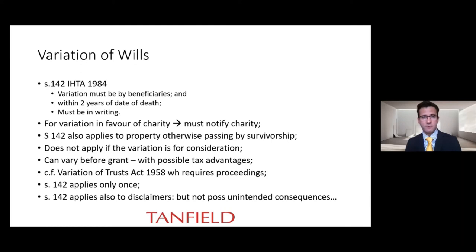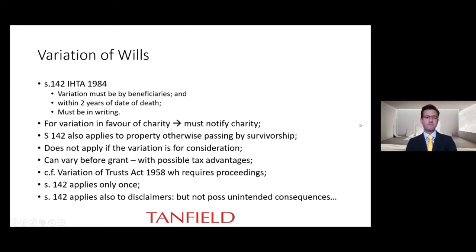This is different from a procedure for an application to vary under the Variation of Trusts Act 1958 — which has but one operative section — where you would need to issue proceedings where the interests of minors or those incapable of assenting are involved, where there are unborn issue, or other specifications in section 1 of that Act. The Court of Protection is not deprived of its jurisdiction and will determine matters with respect to persons lacking capacity. HMRC will accept an arrangement made by the court under that Act as an instrument of variation under section 142 of the Inheritance Tax Act. Note that section 142 only applies once — you cannot have a variation of a variation — so get it right the first time. It also applies to disclaimers, which should be treated with caution as they can have unintended consequences such as a partial intestacy.